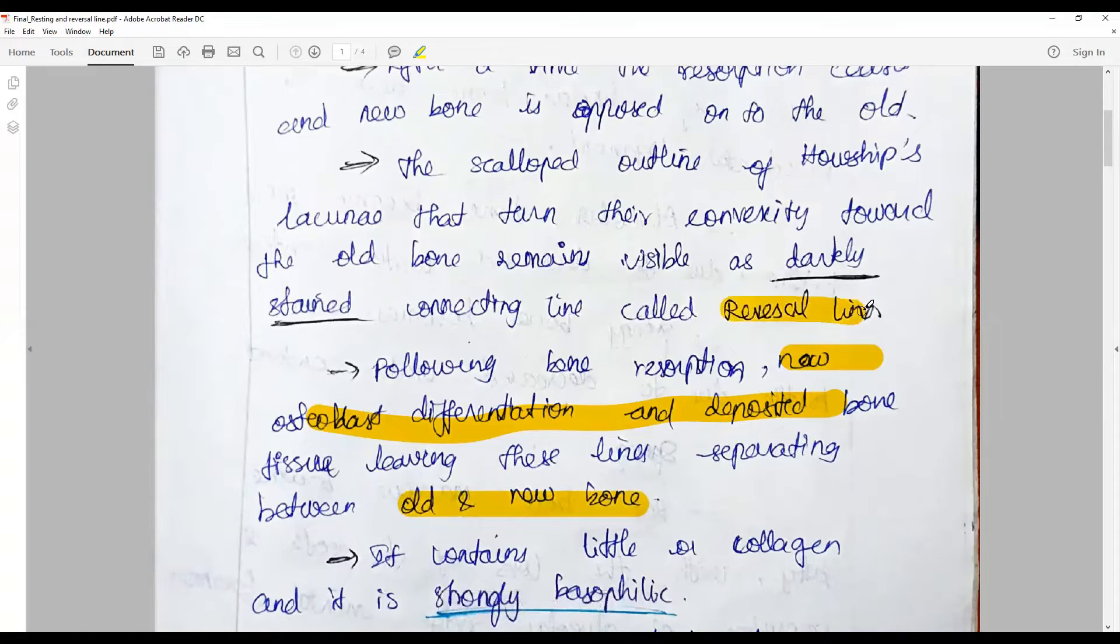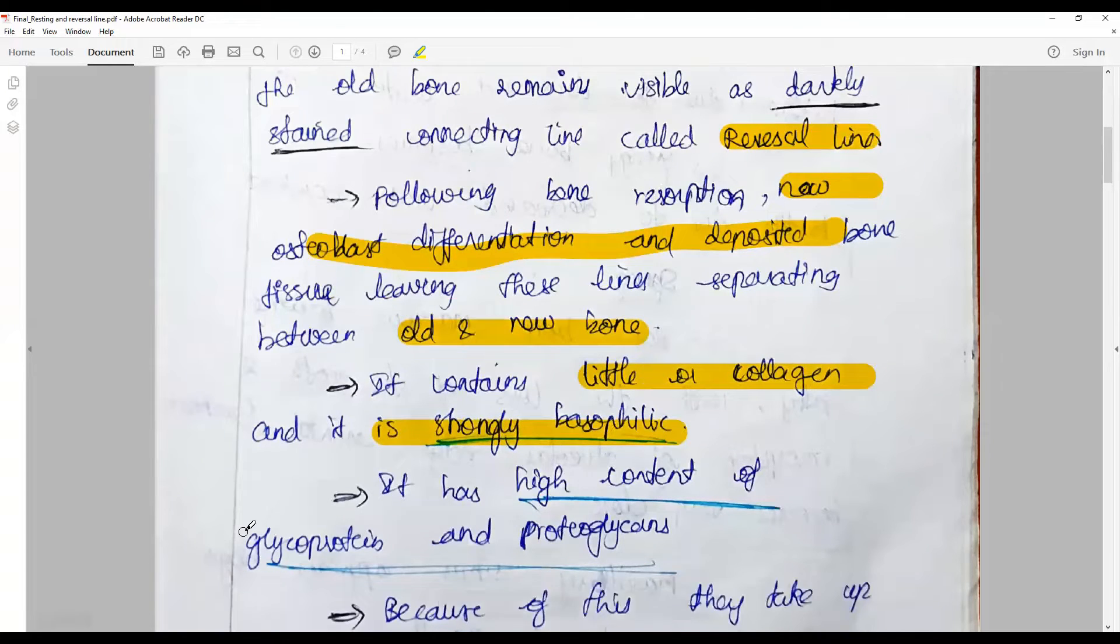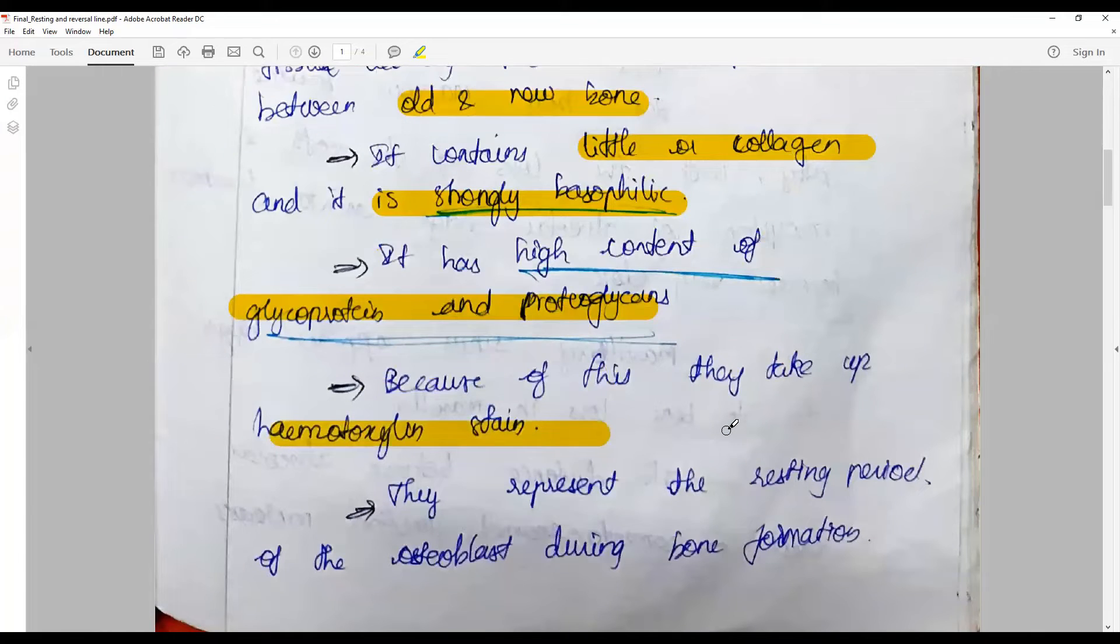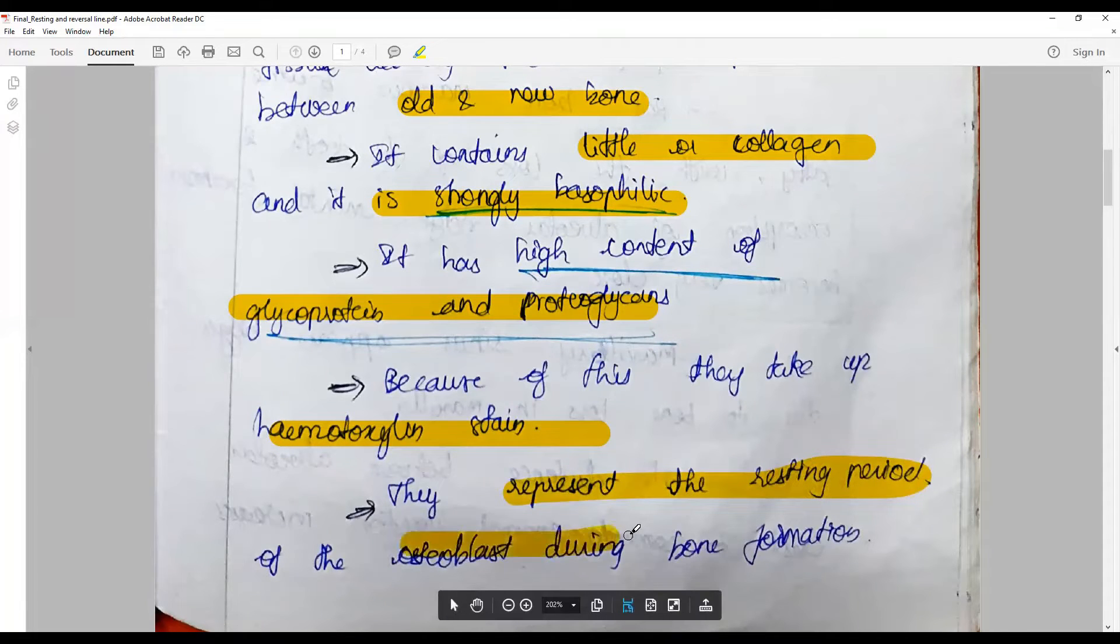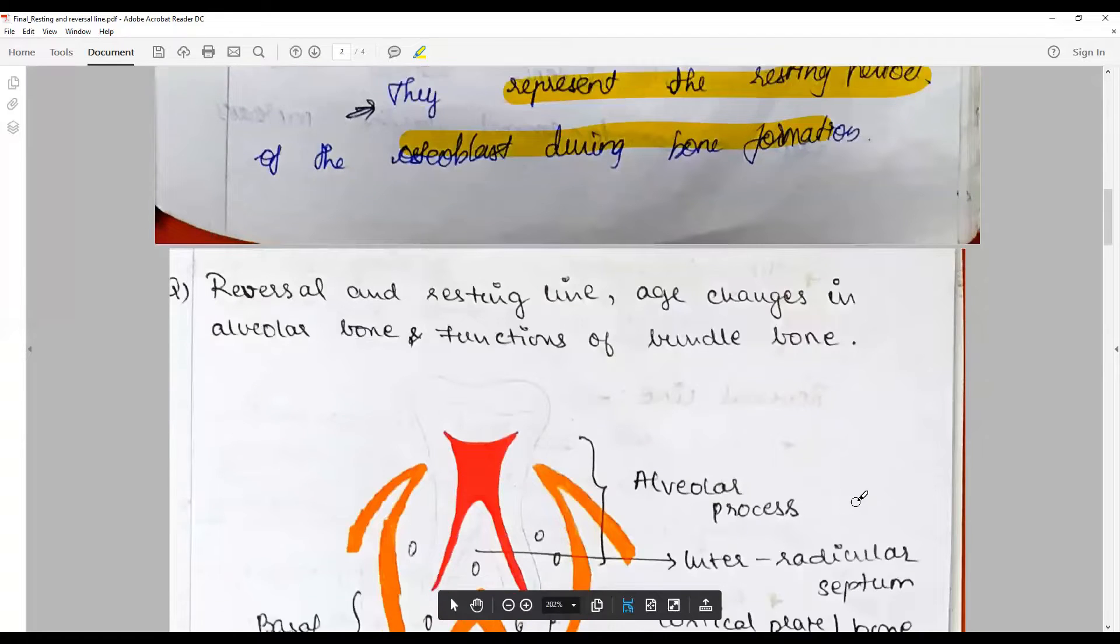bone. That is the reversal lines. They contain little or no collagen and are strongly basophilic. They have higher contents of glycoproteins and proteoglycans, because of these factors they take up more hematoxylin stains. The resting line represents the resting period between subsequent layers of osteoblast formation during bone formation.